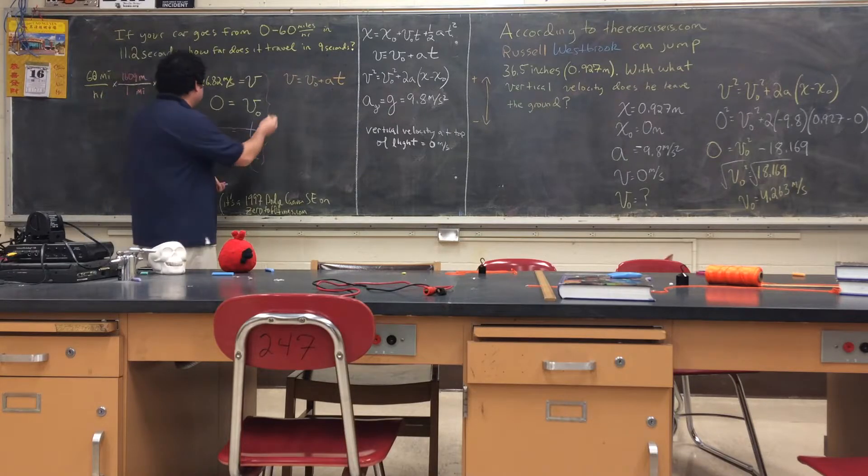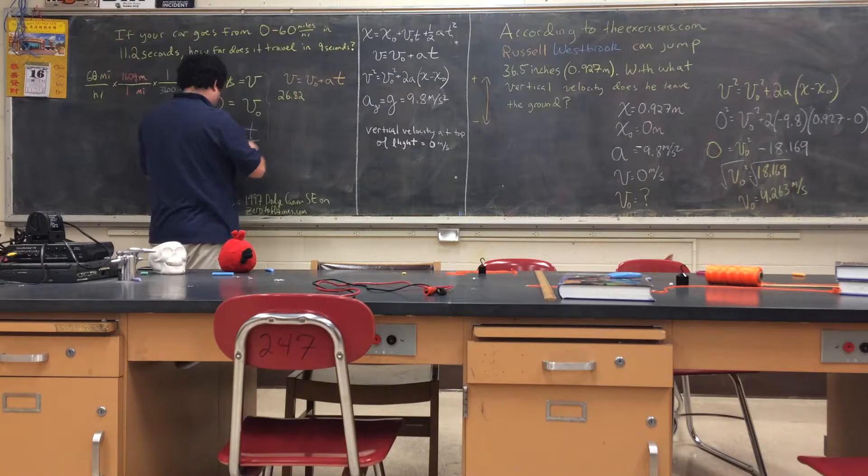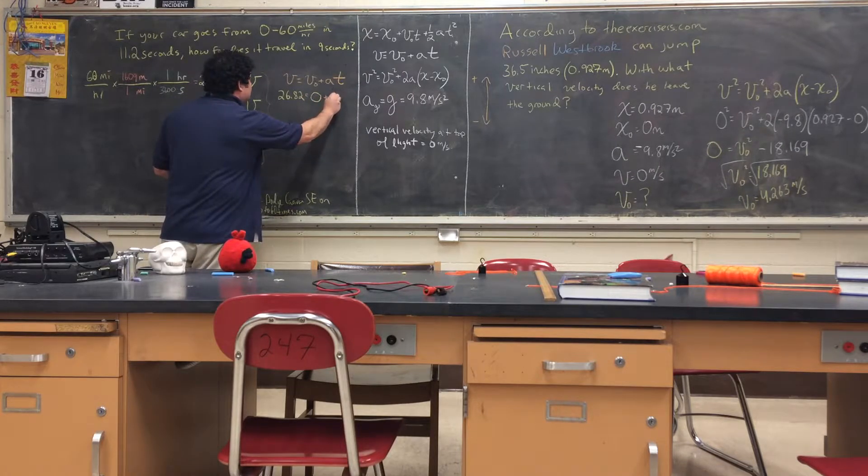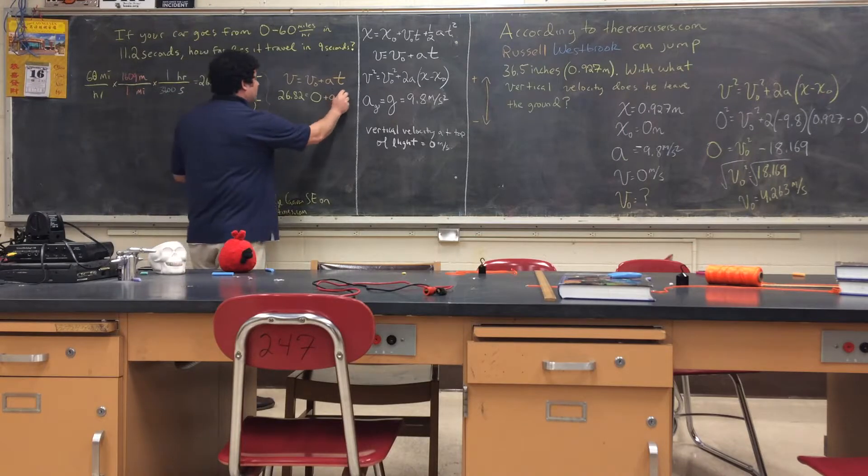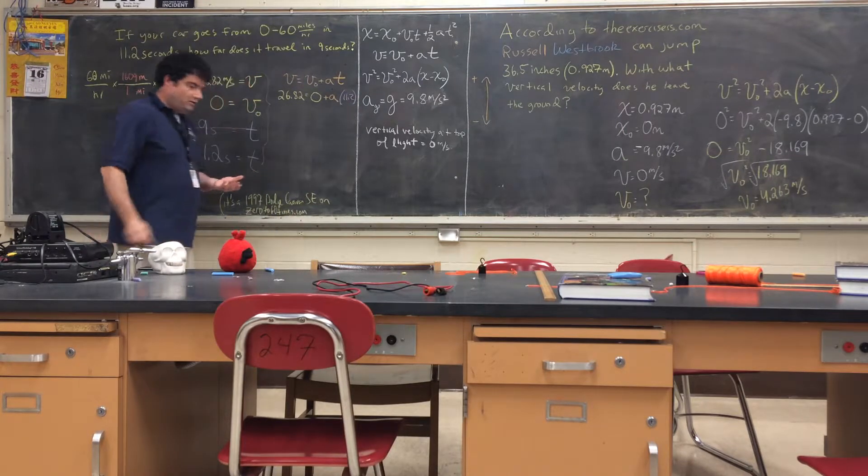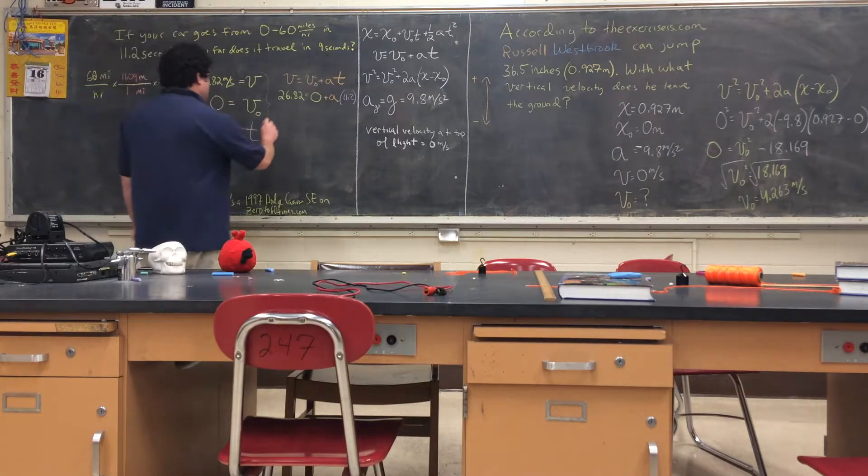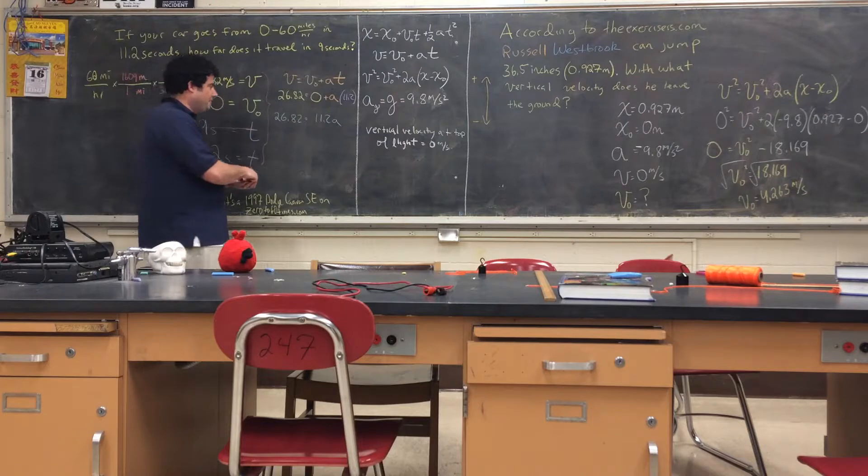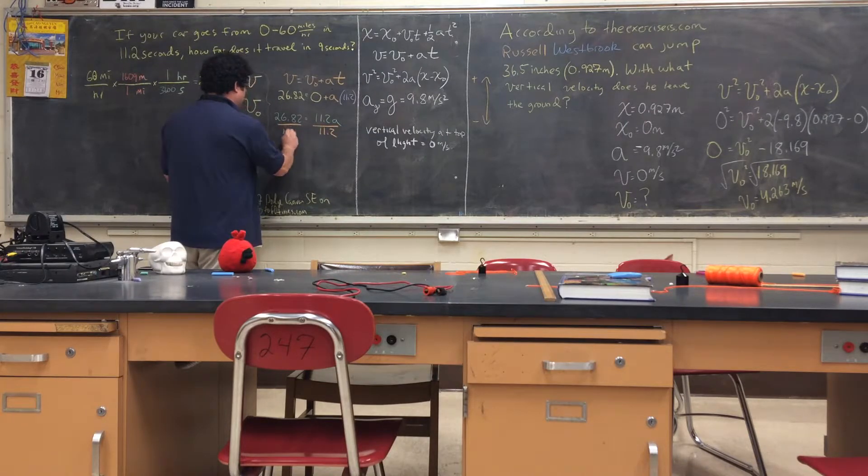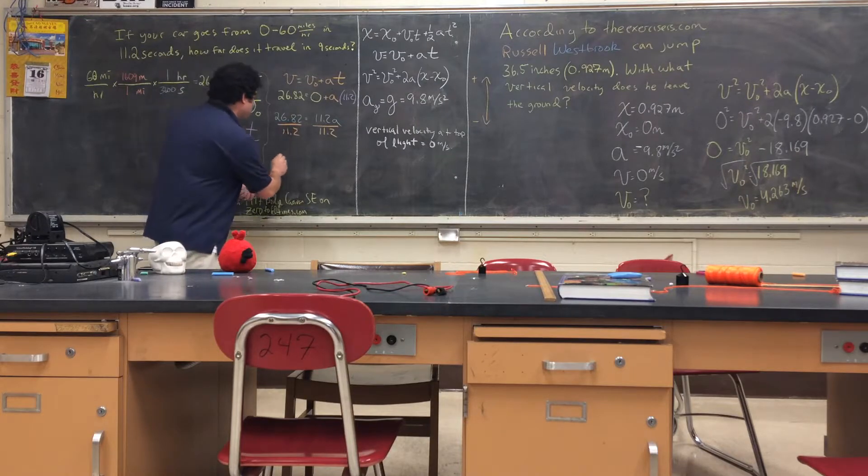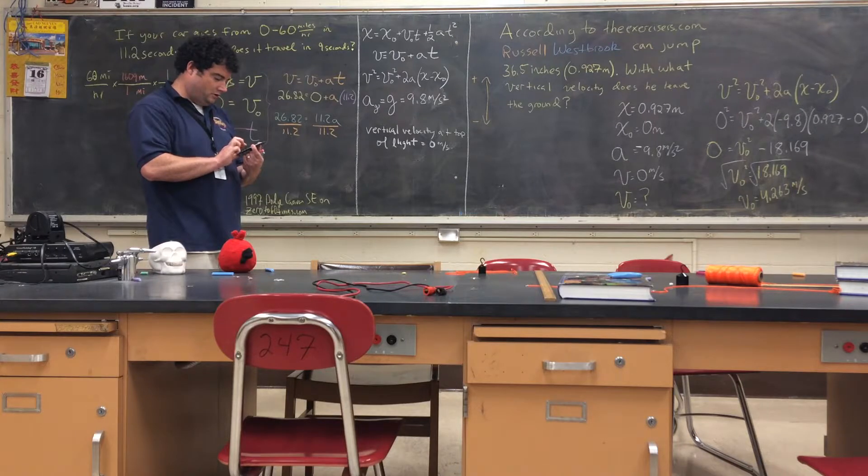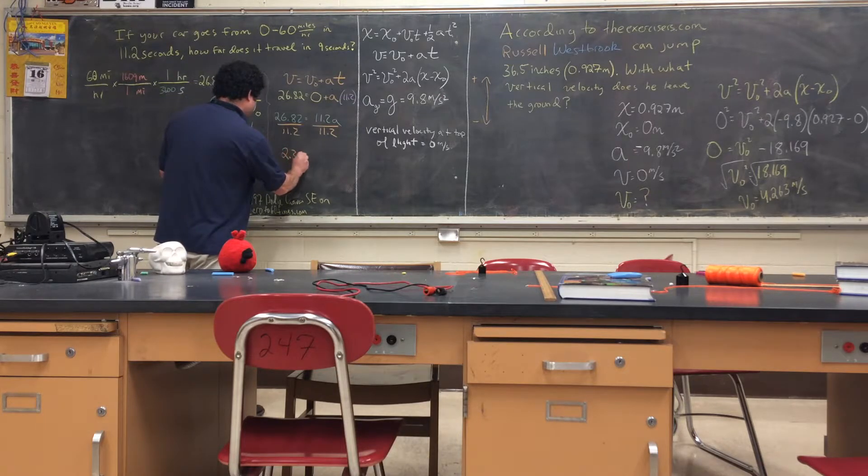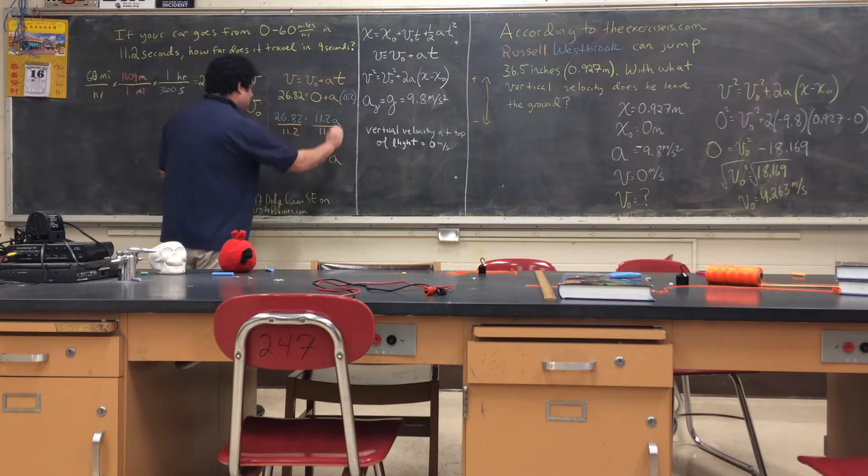So V apparently is 26.82. VO is 0. We don't know A. So now we're going to know A. And T is 11.2. So what we find out is that 26.82 equals 11.2A. So we'll just divide both sides by 11.2. And we're left with 26.82 divided by 11.2. 2.39 meters per second squared is our acceleration.